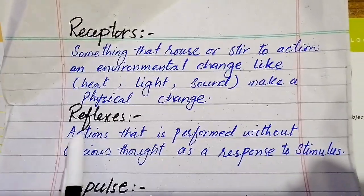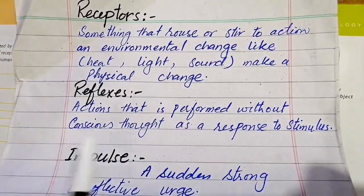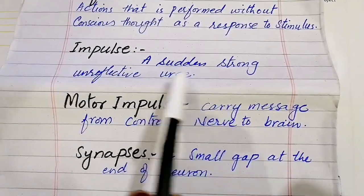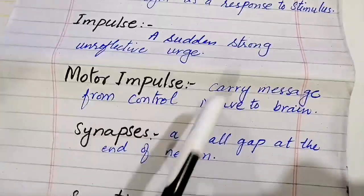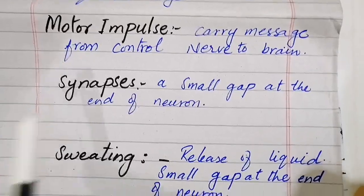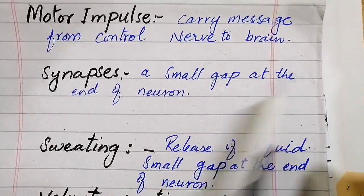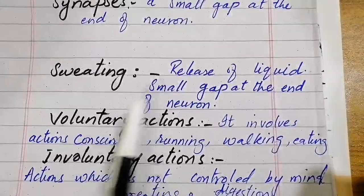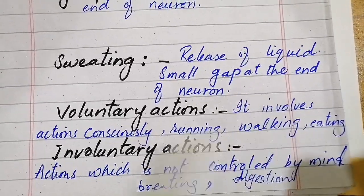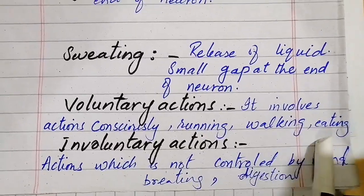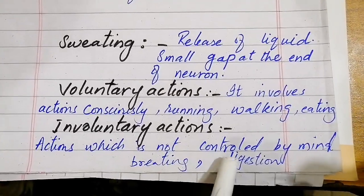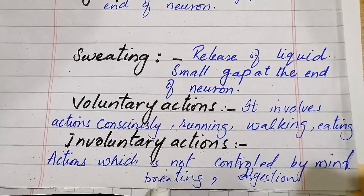Reflexes: an action performed without conscious thought as a response to a stimulus. Impulse: a sudden strong reactive urge — the message sent instantly. Motor impulse: carries the message from the control nerve to the brain. Synapse: a small gap at the end of the neuron. Voluntary actions involve consciously performed actions such as running, walking, eating, and sleeping.